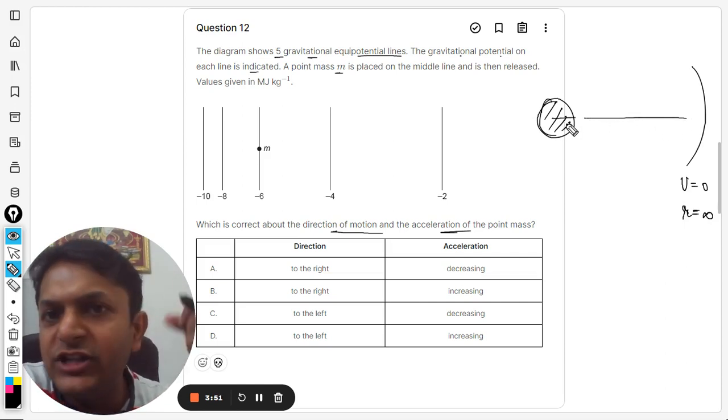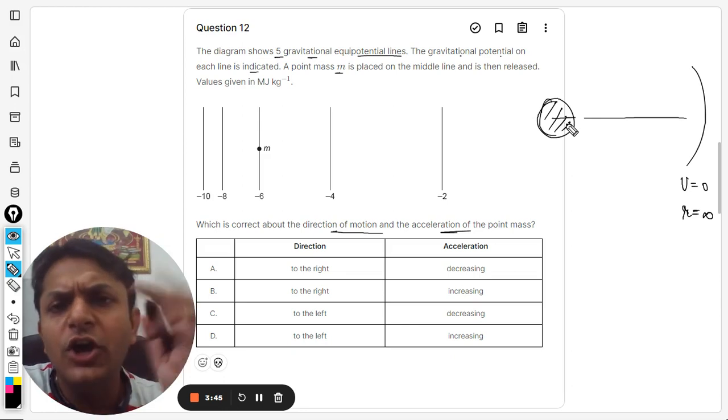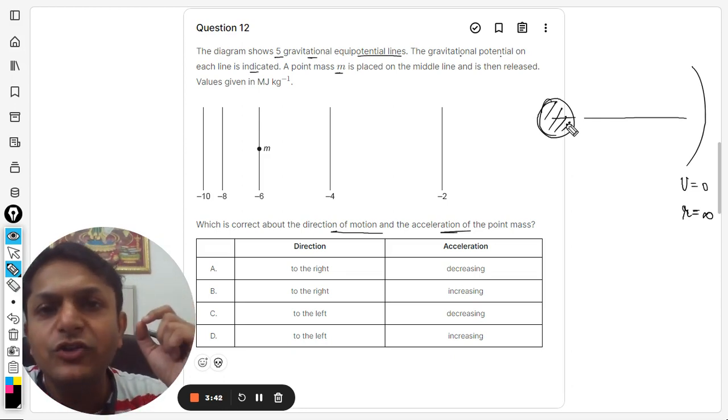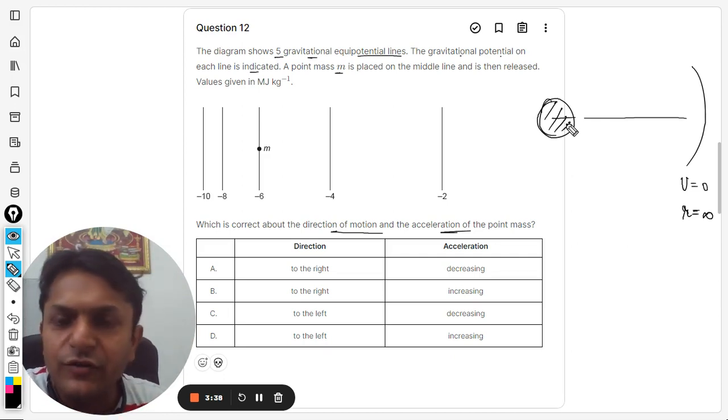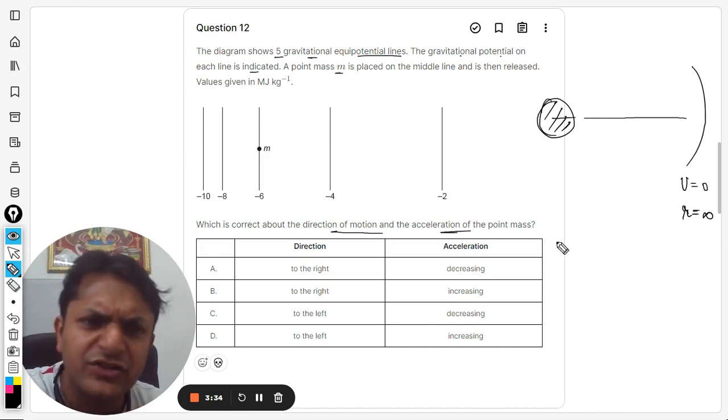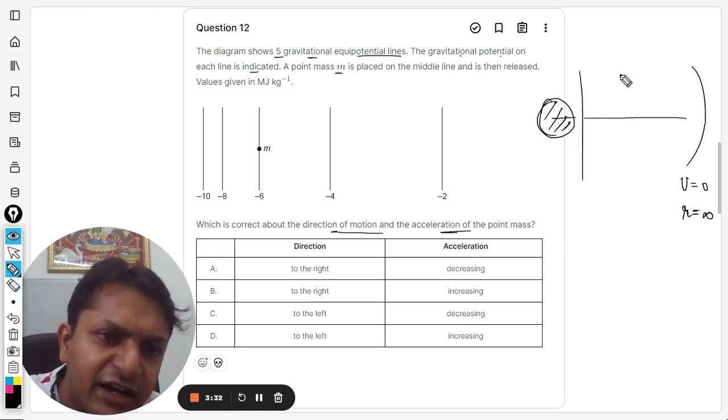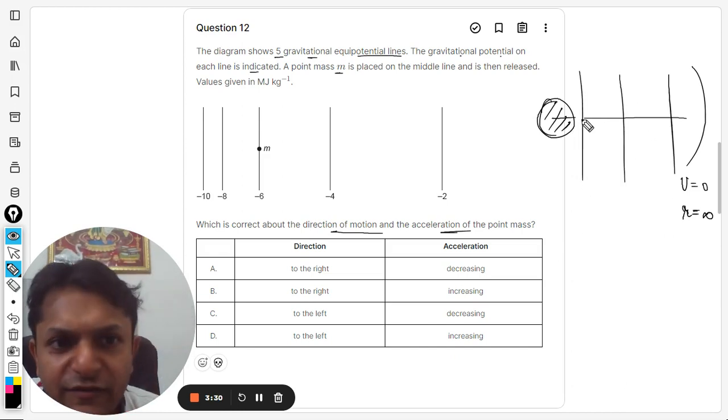Now when you come near to it, the potential starts having some value, either positive or negative. In the case of gravitation, only and only negative values of the potential are possible. Positive values of the gravitational potential are not even possible. There's no chance of creating positive potential.